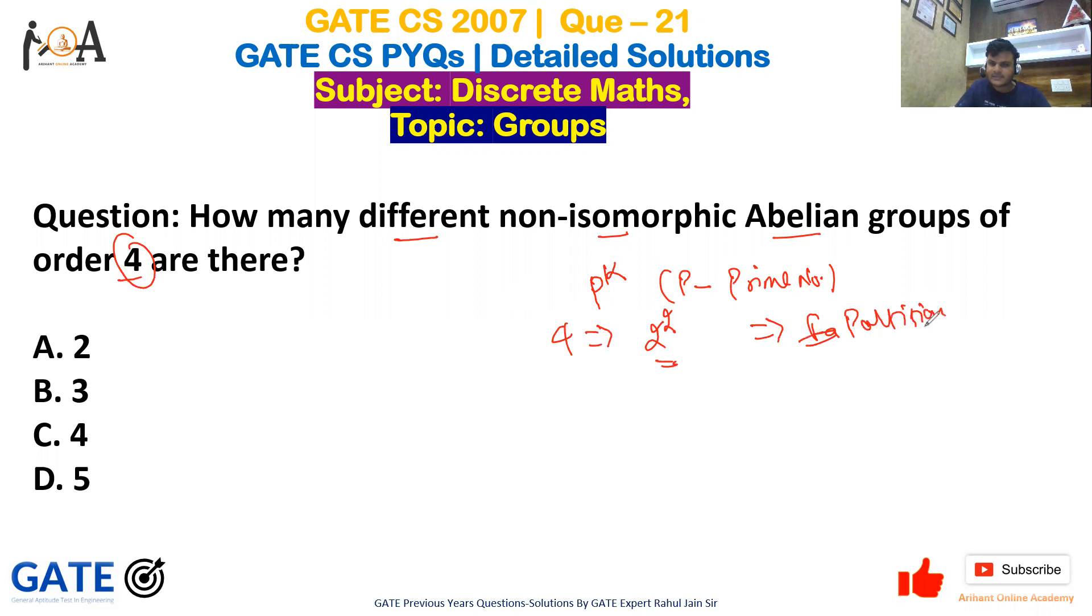Now there is a need of factorization, that is partition basically. So how many partitions of 2 are there? Only 2: that is 1,1 and the another one is 2,0 or 2 alone.